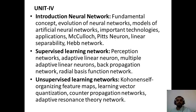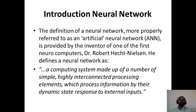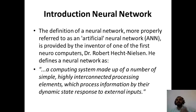To start with this chapter, let me introduce what a neural network is. The definition of a neural network — more properly referred to as an artificial neural network — is provided by the inventor of one of the first neural computers, Dr. Robert. He defines a neural network as a computing system made up of a number of simple, highly connected processing elements, which process information by the dynamic state response to external inputs.